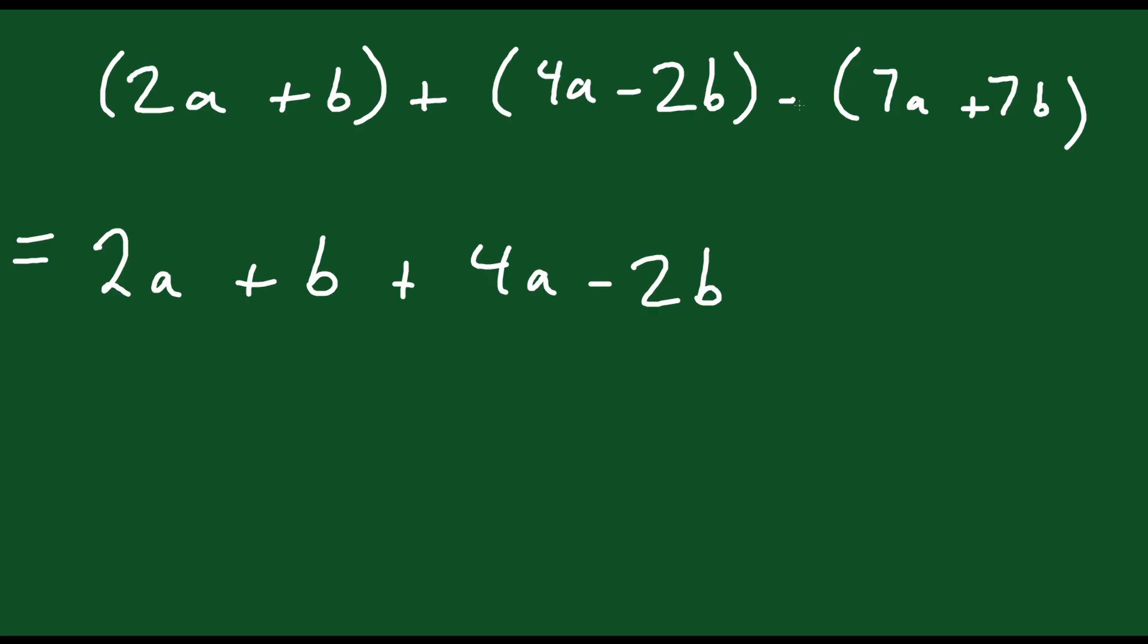And then for this last one because this is a negative sign we have to make both of these terms minus. So minus 7a minus 7b. Just like that.